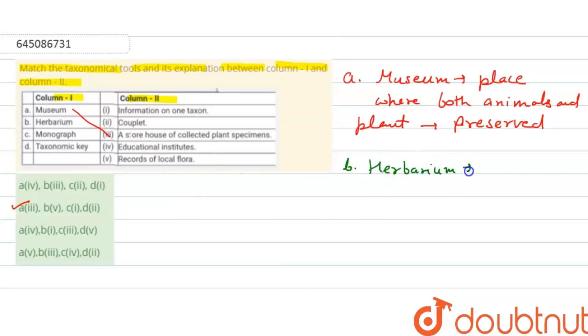Herbarium is a tool to study taxonomy, or we can say a taxonomic tool. It is a place where dried and pressed plant parts are preserved on a sheet.